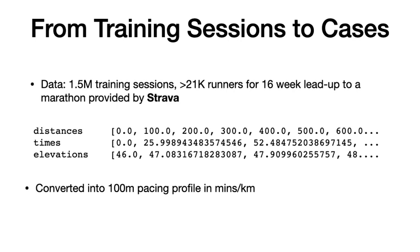We have over 1.5 million training sessions from more than 21,000 runners in the 16-week lead-up to a marathon. This data was obtained from the popular mobile fitness app Strava via a data sharing agreement. The data includes distances for every 100 meters run, the time taken for each 100-meter interval, and elevation. These are converted into a 100-meter pacing profile in minutes per kilometer, where a larger value means a slower pace.